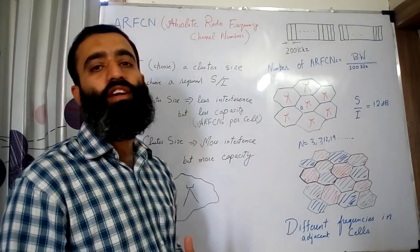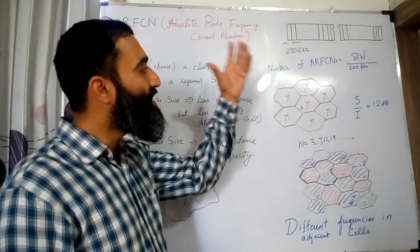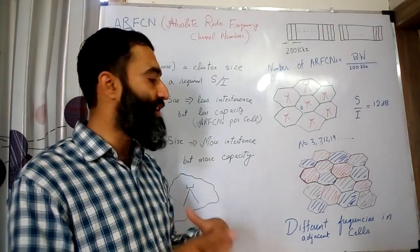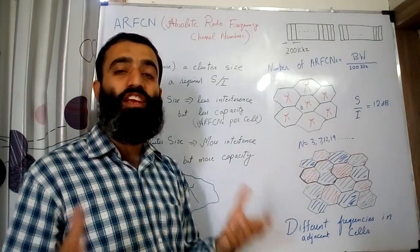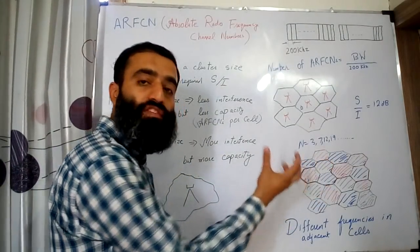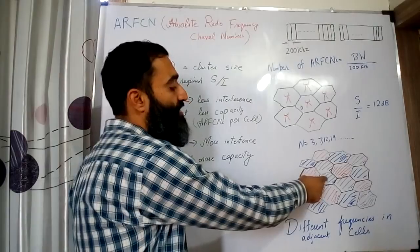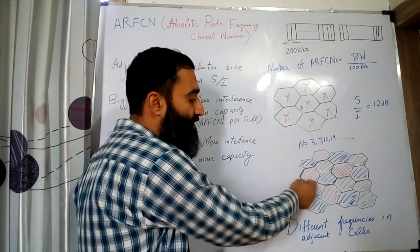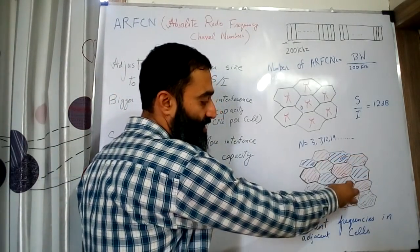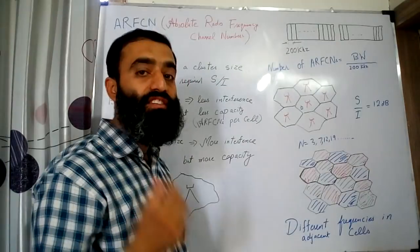This problem can be overcome by using frequency reuse. In frequency reuse, we divide all 25 ARFCNs into groups. For example, with a cluster size of three, we divide the 25 ARFCNs into three cells — one third goes to one cell, one third to the next, and one third to the third cell. This forms a cluster, and this cluster then replicates across the network. Cells using the same frequency are shaded the same color in the diagram.